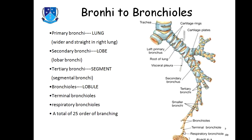The terminal bronchioles are further divided into respiratory bronchioles — the part of the bronchiole surrounded by capillaries where gas exchange can take place. The respiratory bronchioles are further divided into alveolar ducts, which lead to the alveolar sacs. From the trachea to the alveolar sac, there are 25 orders of division and branching.